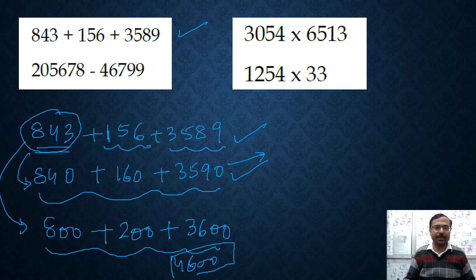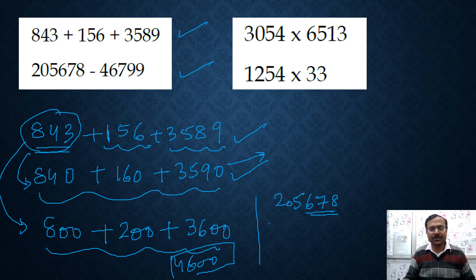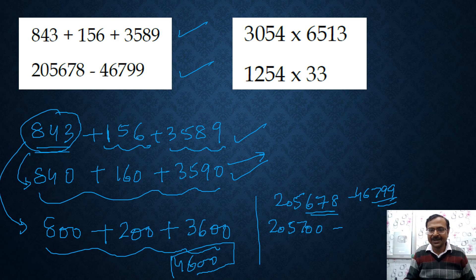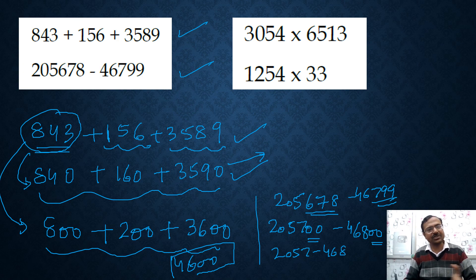Likewise, if you see the subtraction problem which I have taken up here, 205678 minus 46799. 678 is closer to 700. So this will become 205700 and subtract what? 46799. Obviously, 799 is closest to 800. So I will write it as 46800. And now, subtraction is very easy because two zeros here, two zeros here and you can only subtract 20577 and 468 and then suffix two zeros to get your final answer. You can even round this off to nearest 1000 also to get a rough estimate of the difference.